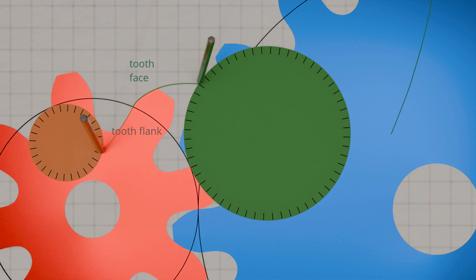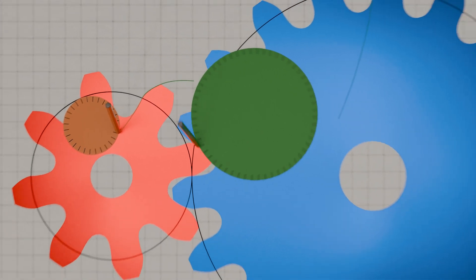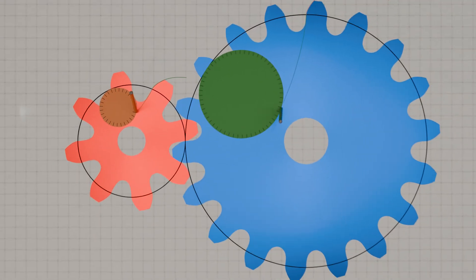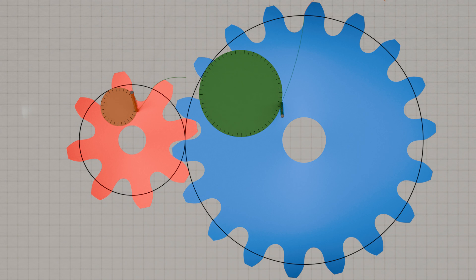Conversely, the inner rolling circle for the design of the tooth flank of one gear corresponds to the outer rolling circle for the design of the tooth face of the opposite gear. This combination ensures the validity of the law of gearing required for a constant transmission ratio. In principle, this law states that the direction of force on the meshing teeth must always pass through the pitch point. More information on the law of gearing can be found in the linked video. Later on, we will look in more detail at the meshing characteristics of cycloidal gears.